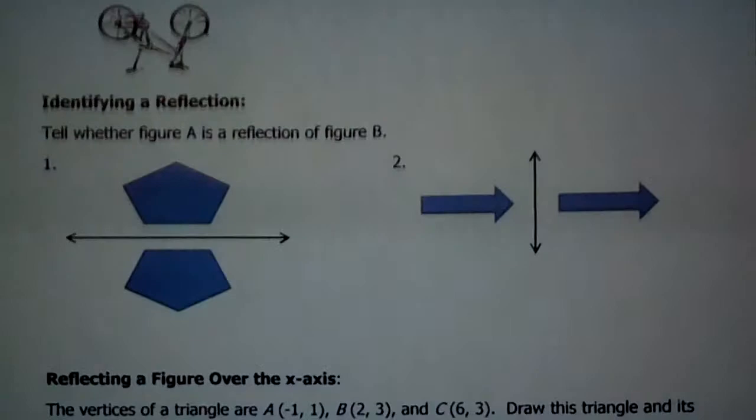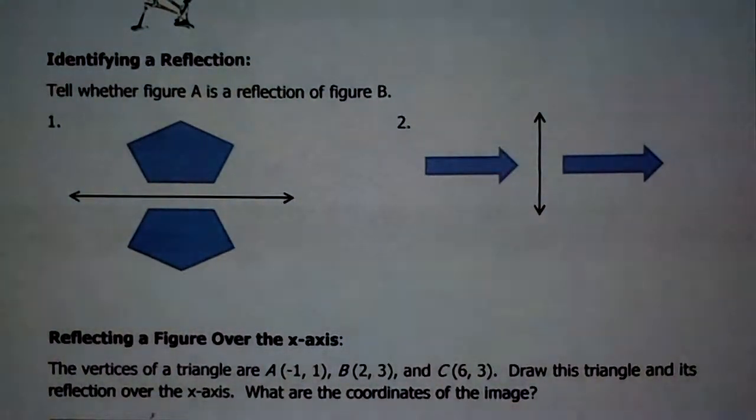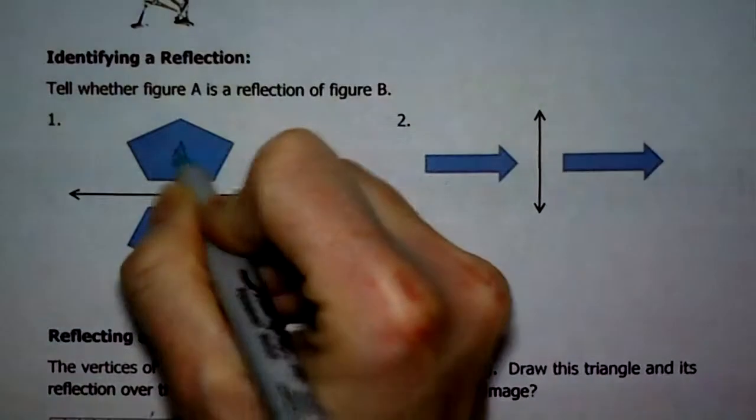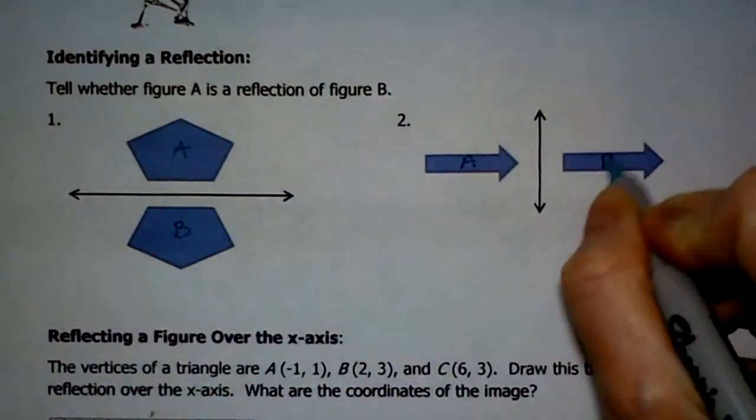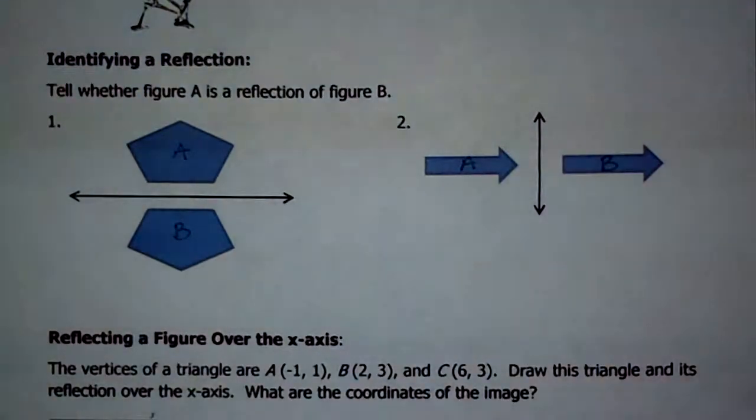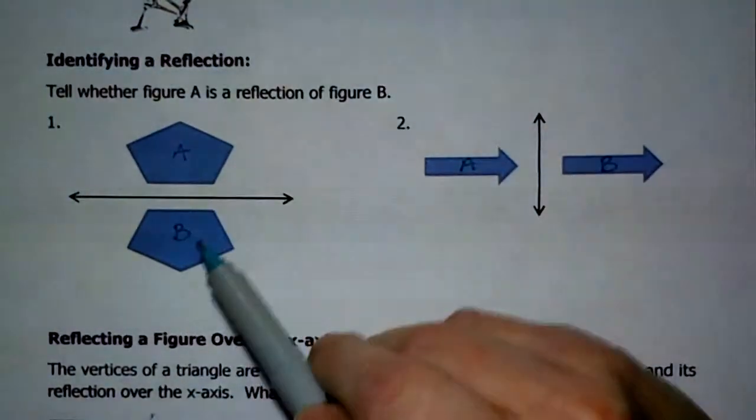So what I'd like you to be able to do first is to look at two shapes, two figures, and tell me, is A a reflection of figure B? So I'm going to label these because I just printed out some original ones. The other ones did not seem dark enough. Yours have an A and a B on there already. Mine are nice and colorful because I have a color printer.